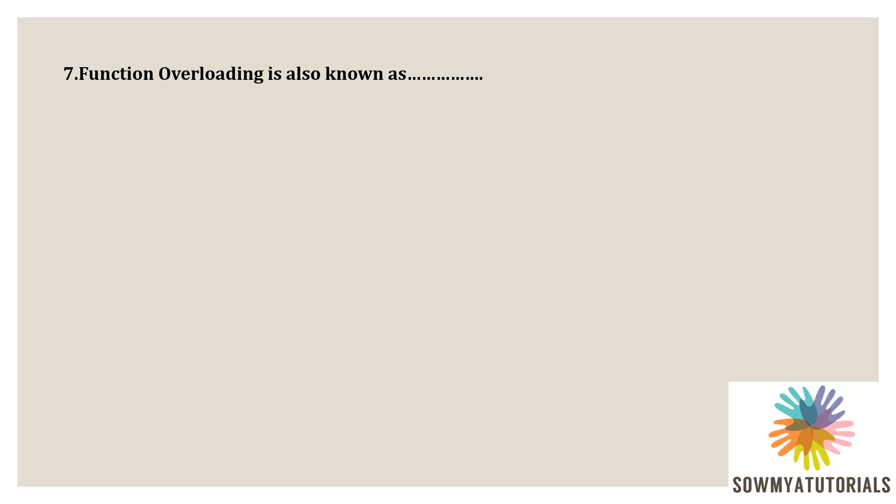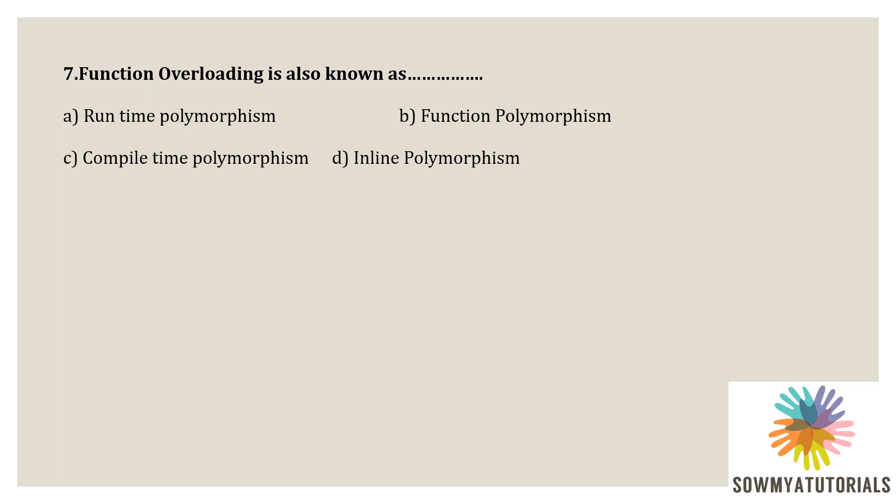Next question: function overloading is also called as what? Options are: A) runtime polymorphism, B) function polymorphism, C) compile-time polymorphism, D) inline polymorphism. The correct answer is compile-time polymorphism, because function overloading operations are carried out at compile time. The main factor in function overloading is the function argument list. C++ distinguishes overloaded functions by the number and type of arguments, and it is invoked automatically by the compiler. So function overloading is also called compile-time polymorphism.